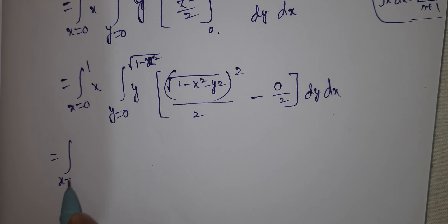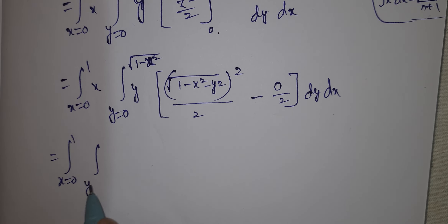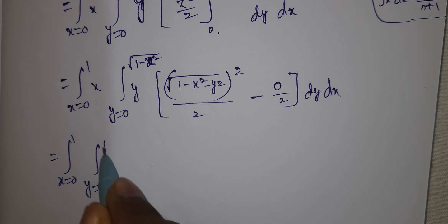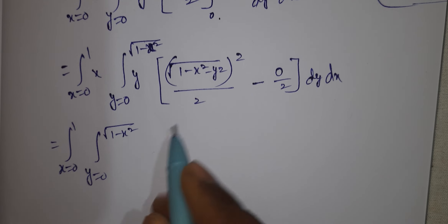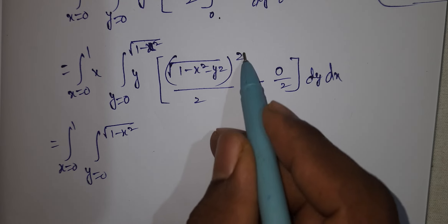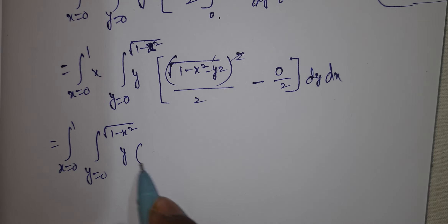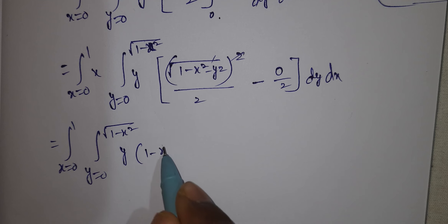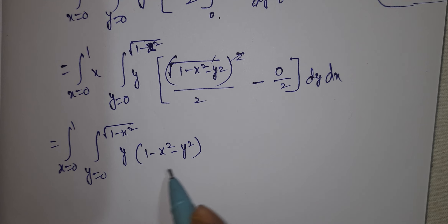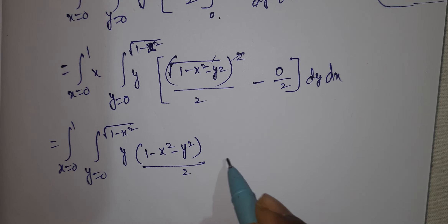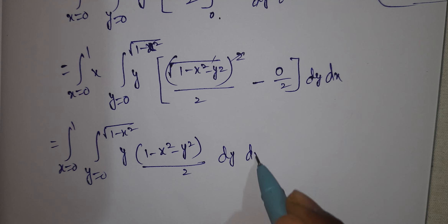So after integrating with respect to z, we have: integral x = 0 to 1, y = 0 to √(1-x²), of y times (1-x²-y²)/2 into dy dx. The square root and square cancel, giving y·(1-x²-y²)/2.